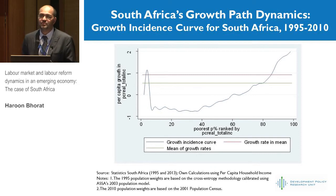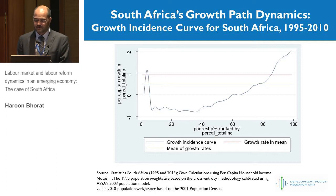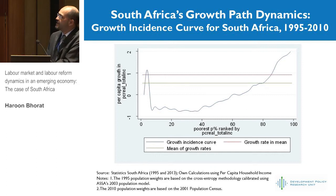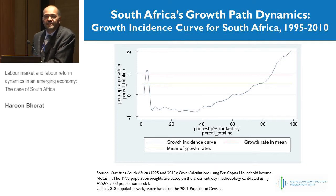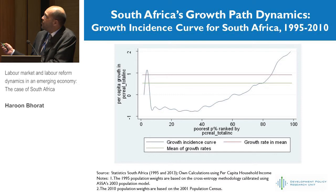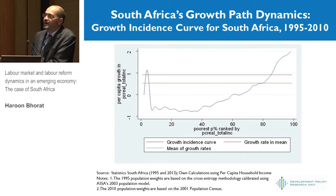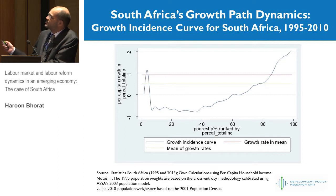I find these pictures incredibly useful to explain in one visual the nature of an economy's growth path. This is a growth incidence curve — it plots essentially the lowest to the highest percentile of households. Over the period — the first 15 years of democracy, roughly 1995 to 2010 — it asks what has been the growth rate across these percentiles. It's a very strong visual suggesting an unequal growth path: growth gains for those at the top end of the distribution, and the state has used those gains to finance social security at the bottom end.